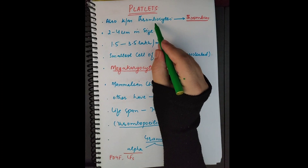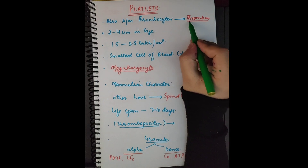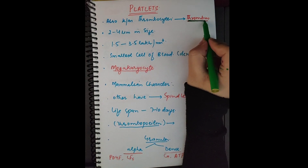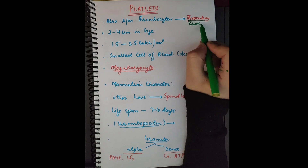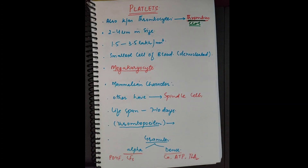Platelets are also called thrombocytes. They are called thrombocytes because they help in the formation of thrombus, and thrombus is another name for a clot. So platelets are cells which help in the formation of a clot — that is why they are called thrombocytes.